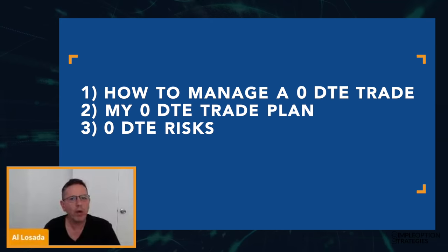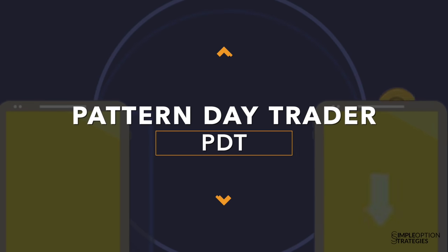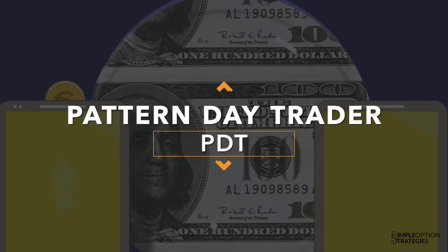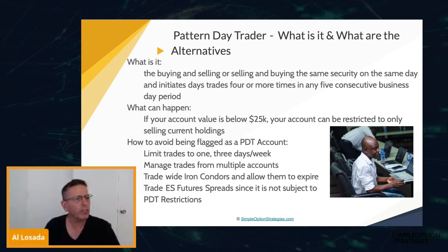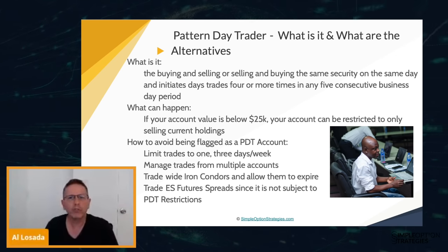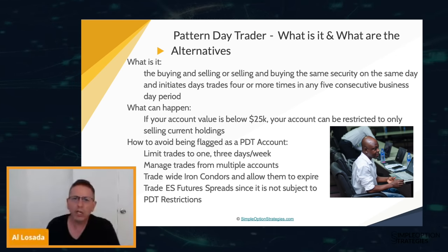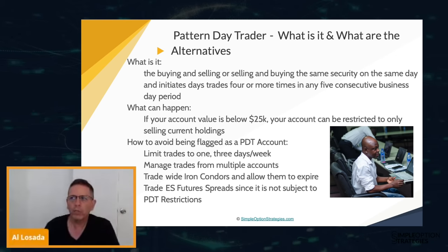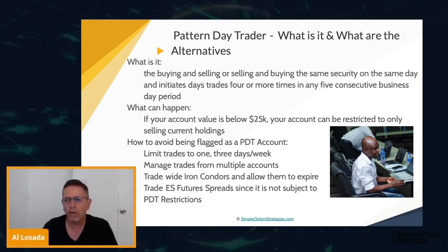Let's start with PDT. PDT is the Pattern Day Trader restriction, based on an account that's under $25,000 of usable margin. If you trade futures in the same account, they basically block out the futures to take that into account, so you have to be careful with that. Let's talk about PDT to make sure everybody understands what it is and what the alternatives are to avoiding it, because there could be some heavy-duty restrictions if it happens.